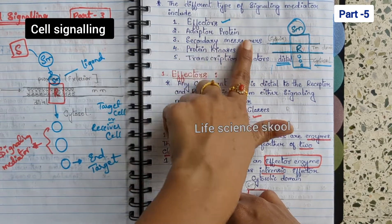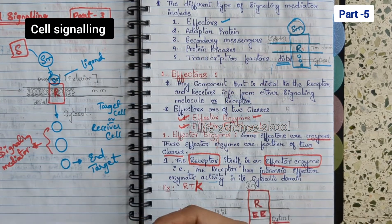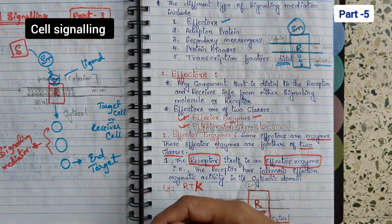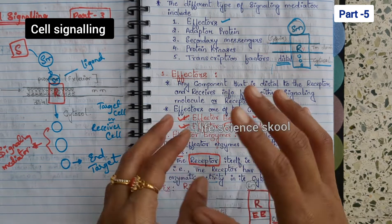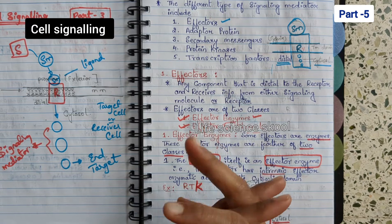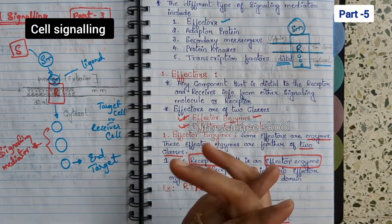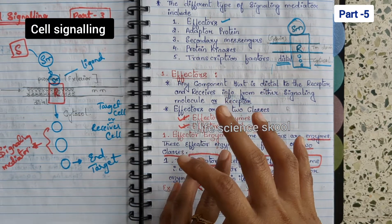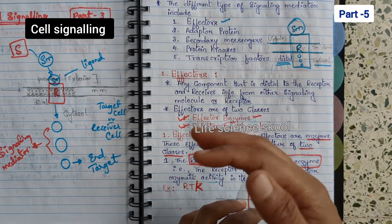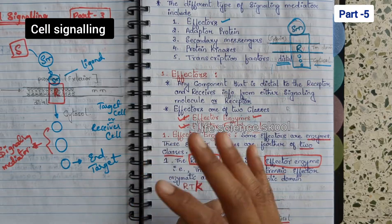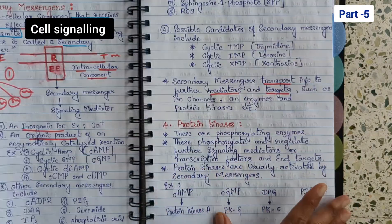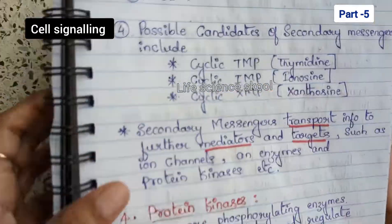Please watch those previous videos — they will be helpful to understand this cell signaling chapter very well, because they cover the basics which will give you thorough understanding of this chapter. Now we will start with protein kinase.